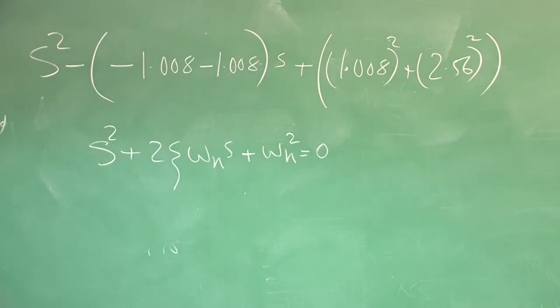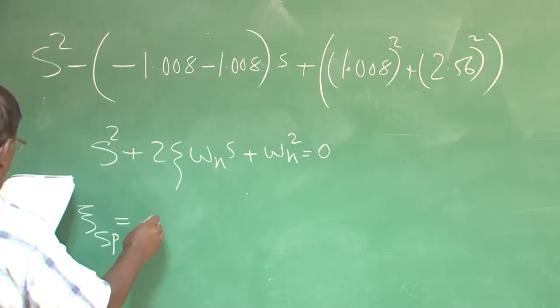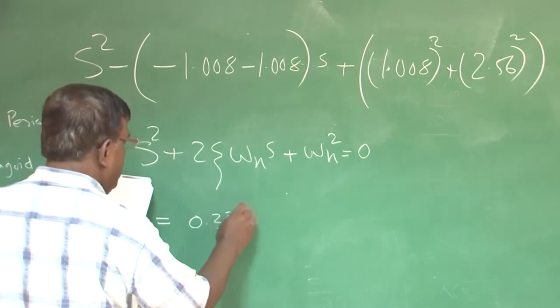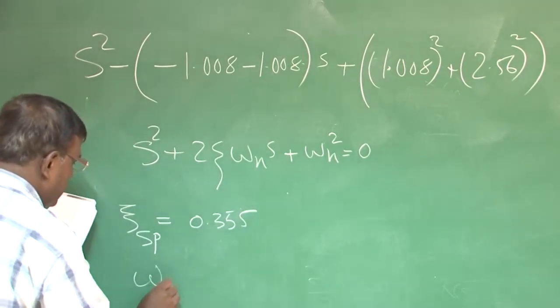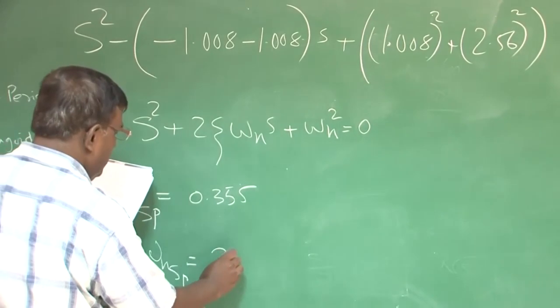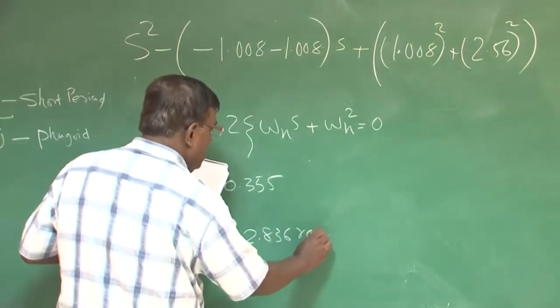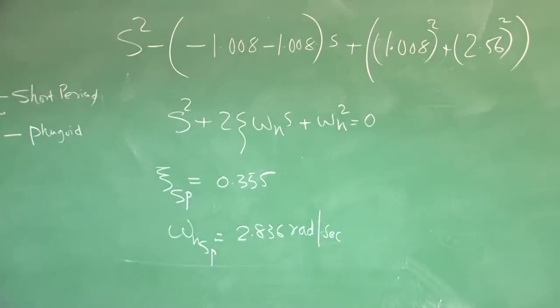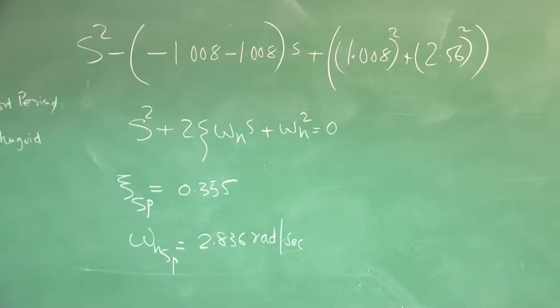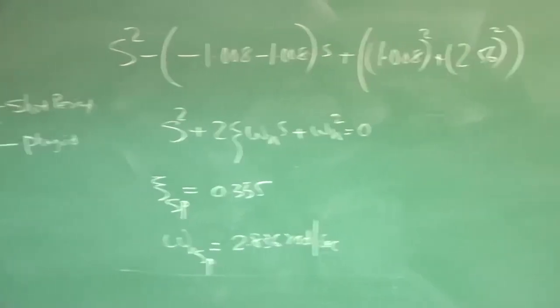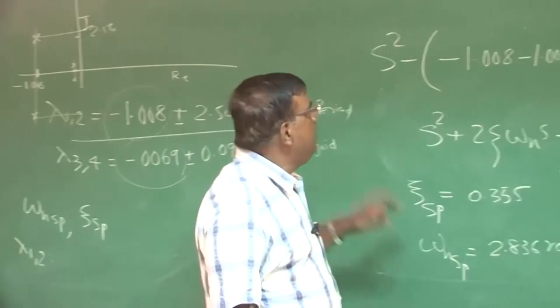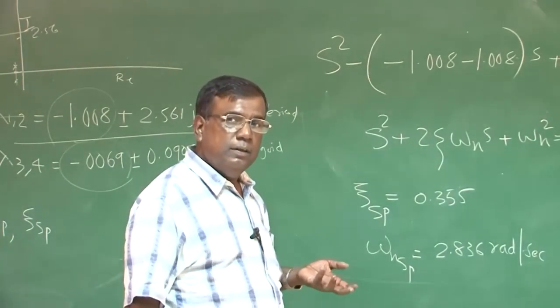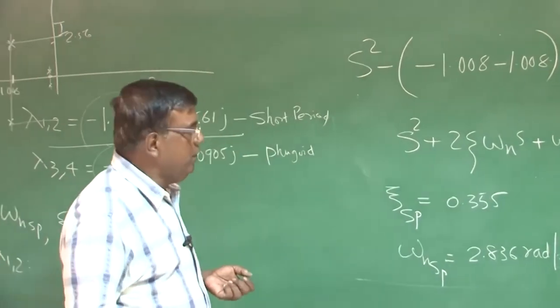Now I will compare this with s² plus 2ζω_n s plus ω_n² equal to 0. And I can find out the value of zeta and omega_n. As zeta_sp means short period will come out to be 0.355, omega_n short period will come out to be 2.836 radian per second. Now you could see that although As⁴ + Bs³ + Cs² and so on equal to 0, but finally whatever we learnt in the second order system, we are applying that as per longitudinal dynamics is concerned. So that is why we are spending so much time on second order system.